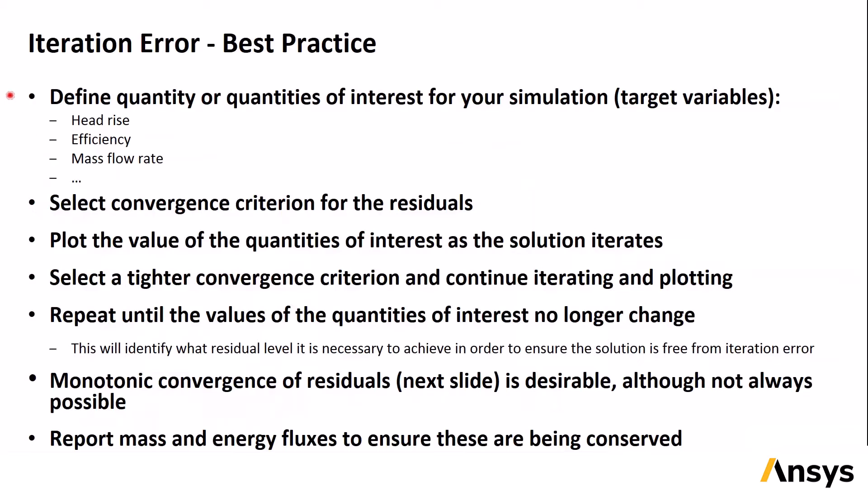Iteration error is the difference between the solution at a given iteration, and the solution when the variables no longer change as more iterations are performed. To check for iteration error, first define your target variables, which might be head rise, efficiency, mass flow rate, whatever makes sense for your problem. Next, select a convergence criterion for the residuals and plot the target variables as the solution iterates. Then select another tighter residual convergence criterion and continue iterating, and repeat this until the target variable plots show that they are no longer changing.